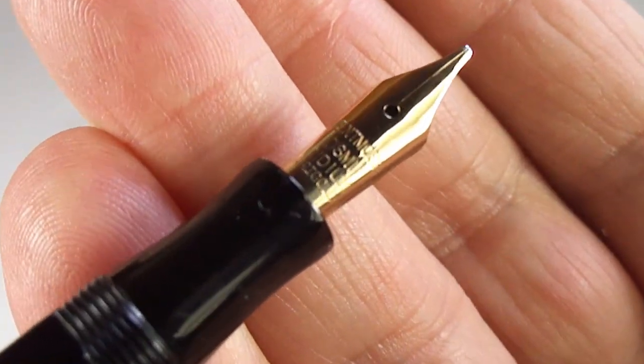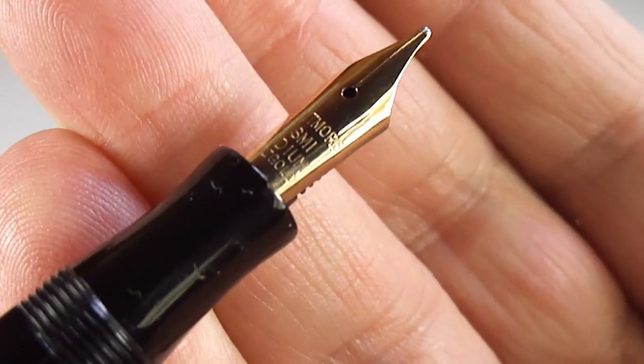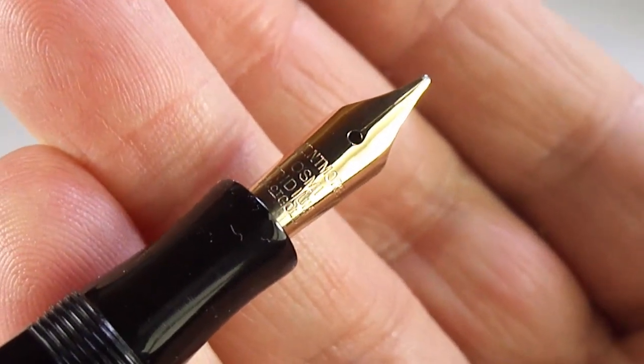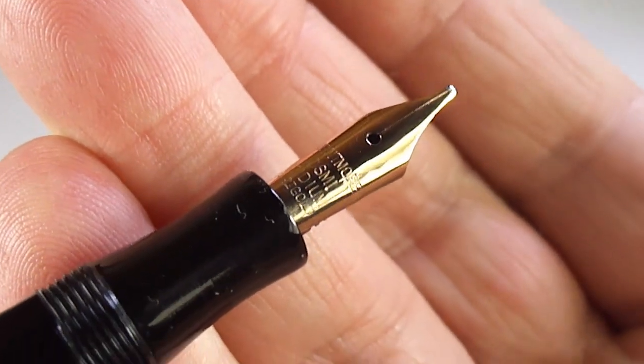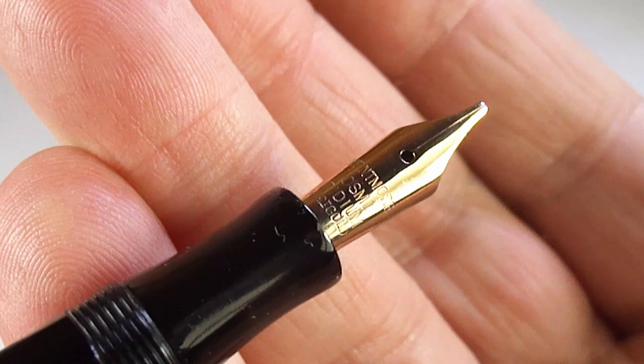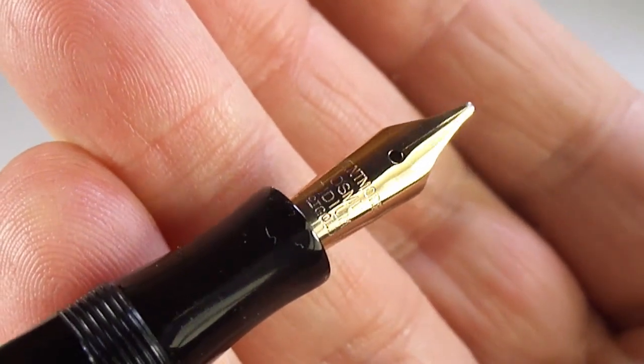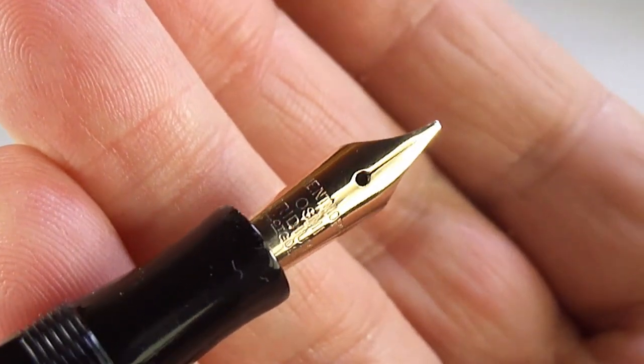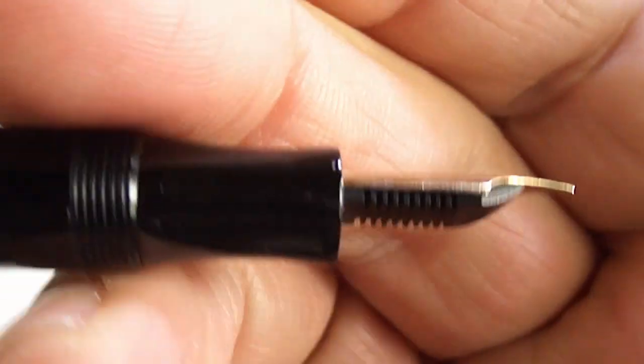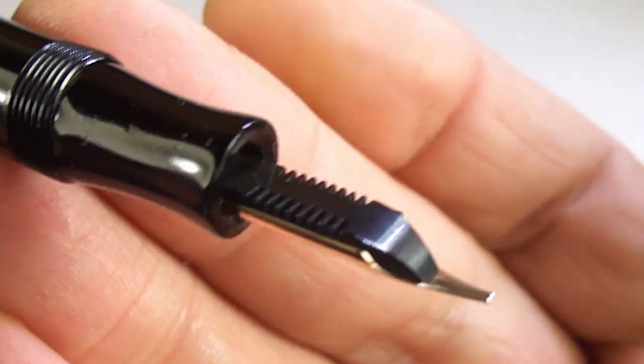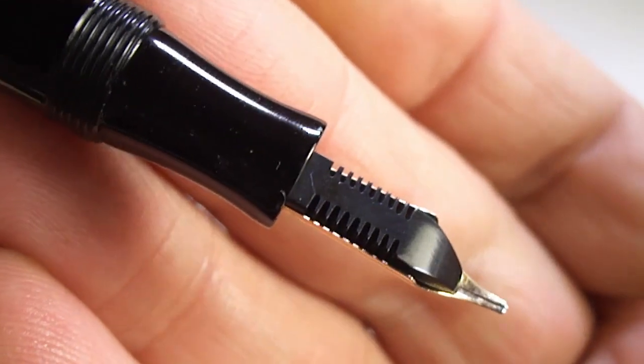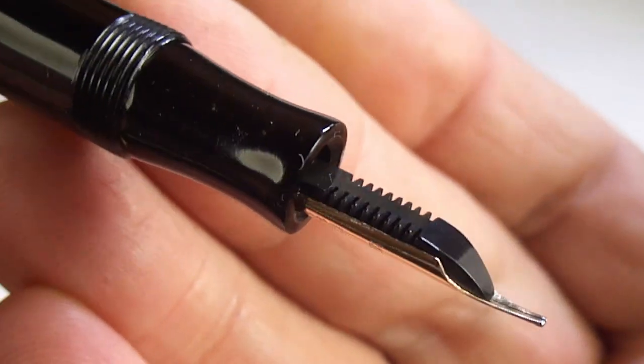Let's show you the nib. It's got a lovely Mentmore Osmi Iridium 14 karat gold nib. And the nice thing about this particular nib, it's actually, when I took it out to clean everything, it's actually quite a large nib. There's a sideways view for you.